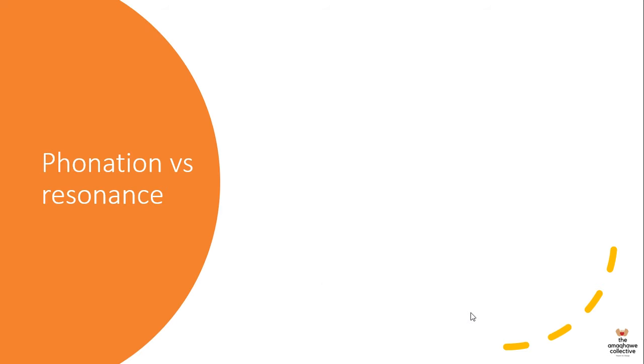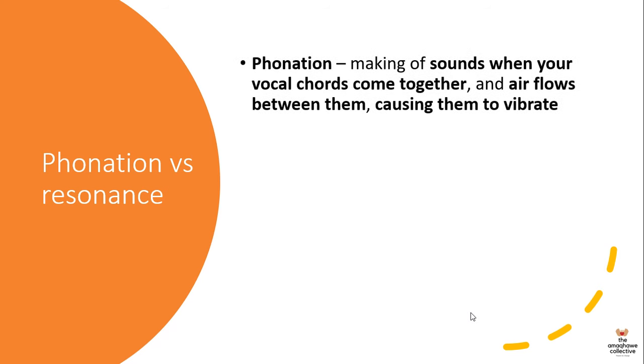So the first thing that we are looking at is the difference between phonation and resonance. Phonation is basically the making of sounds when your vocal cords come together and air flows in between those vocal cords, and that is what causes them to vibrate. So basically, if you take your hand up to your throat while you are speaking, you can hear that vibration, and that is basically the process of phonation that takes place. And in phonation as it relates to drama and music is the ability to create a high quality or to produce a high quality sound. So that is phonation.